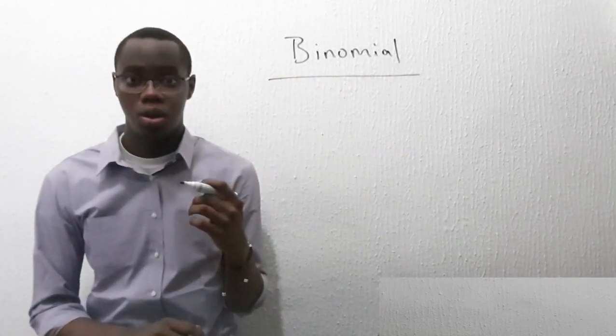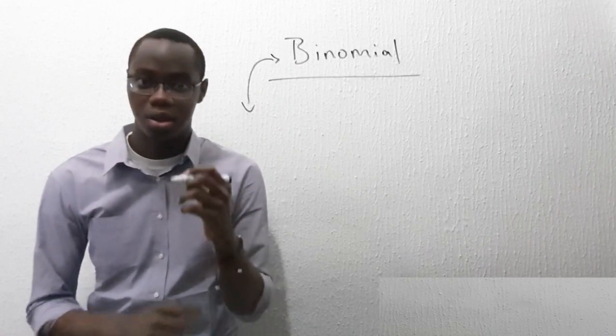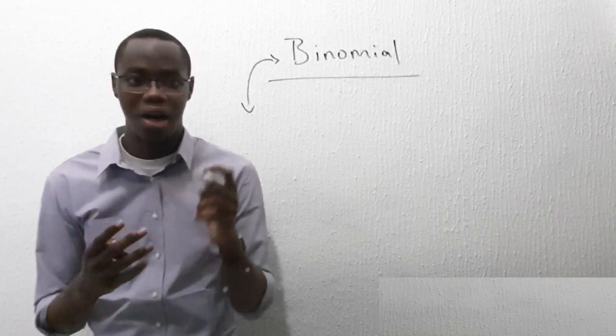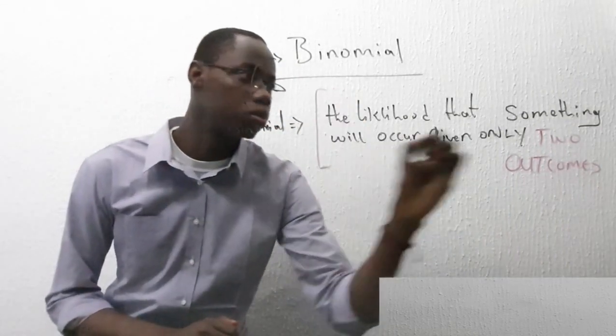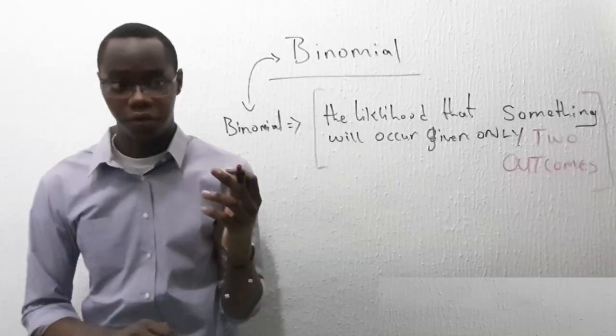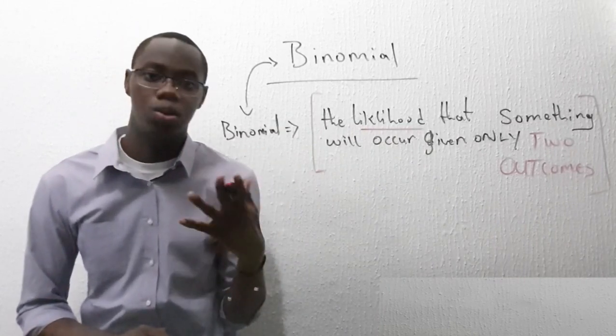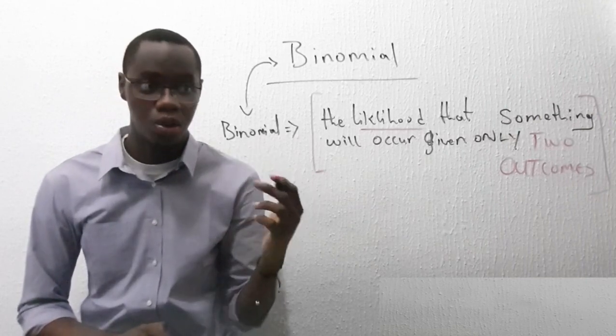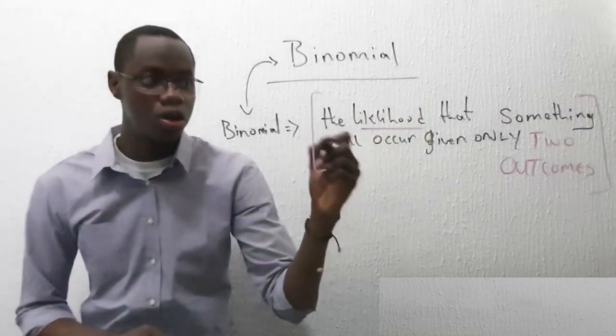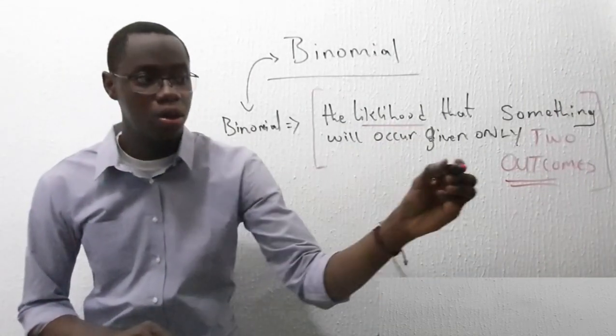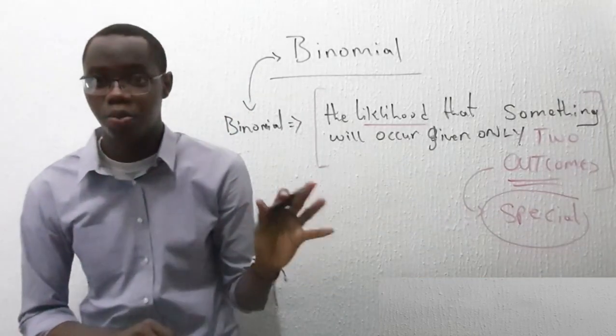So before we start talking about binomial, I prefer examples to definitions. I mean think about it, definitions are not as vivid as examples. So I will not emphasize too much on the definition. But here's the definition: binomial is a likelihood, the likelihood that something will occur, the likelihood that rain will fall tomorrow, the likelihood that the sun will shine tomorrow, the probability that something will occur, given only two outcomes. These outcomes are special to binomial.